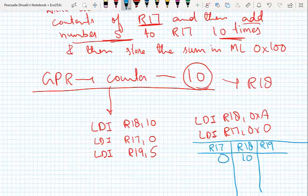So we have: R17 gets 0, R18 gets 10 and acts as the counter, and R19 gets 5. Now I will add — I have to add the contents of R19 (which is 5) to R17, 10 times. The instruction is 'ADD R17, R19', which adds the contents of R19 to R17 and stores the result in R17. I'll label this instruction 'XYZ'. After the addition, I use R18 as my counter and decrement it.